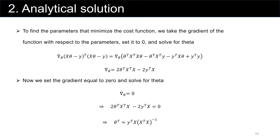To find the parameters that minimize the cost function, we have to find the gradient of the function with respect to the parameters and then set it to zero. From the previous lectures, we learned how to find the gradient in matrix and vector format. So we want to find the gradient with respect to theta — the unknown parameter vector — of (X theta minus y) transpose multiplied by (X theta minus y).